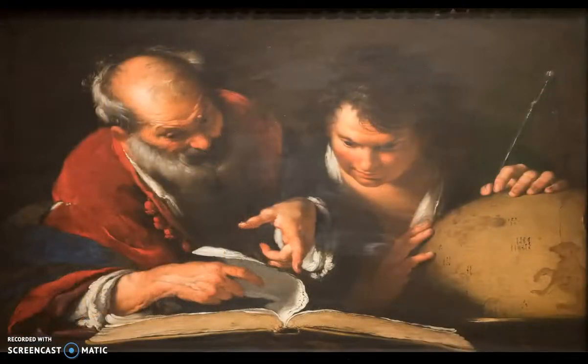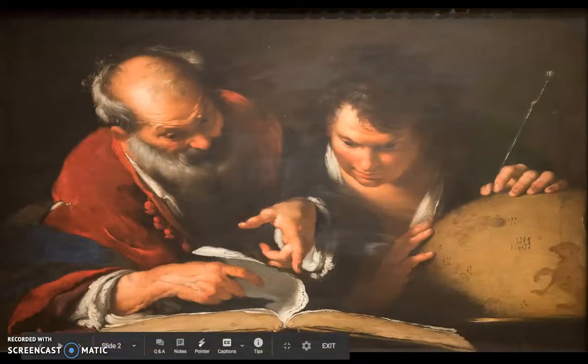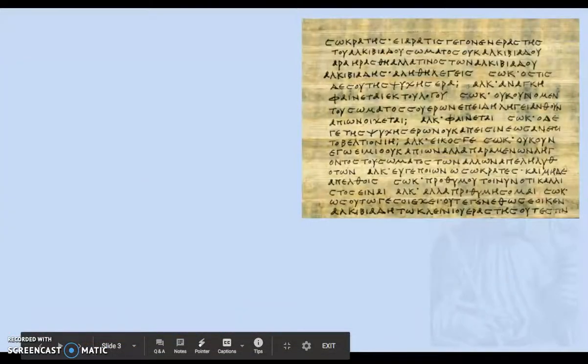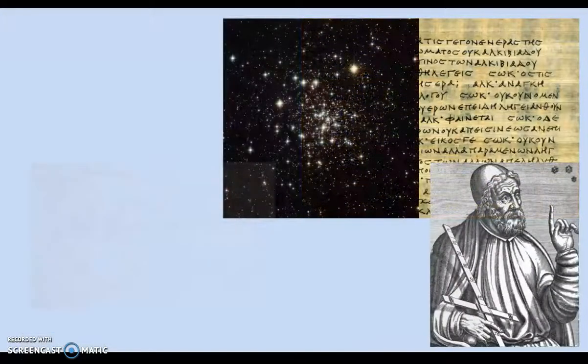During his life, Eratosthenes was a poet, a historian, a musician, a geographer, and mathematician.